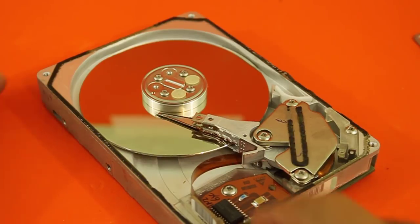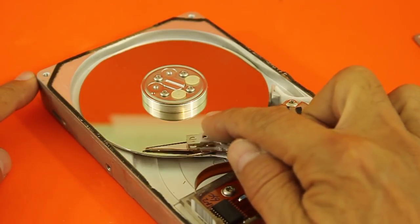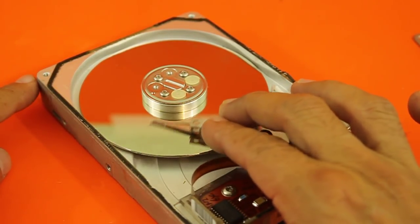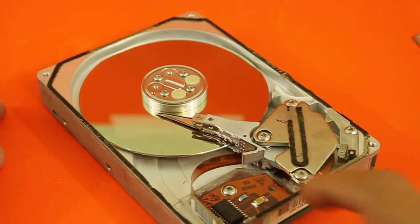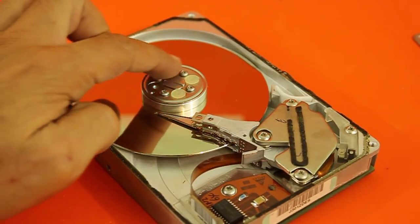As you can see, we have here the reading head. This lever moves in this way and we will use this movement to make the rotor spin.